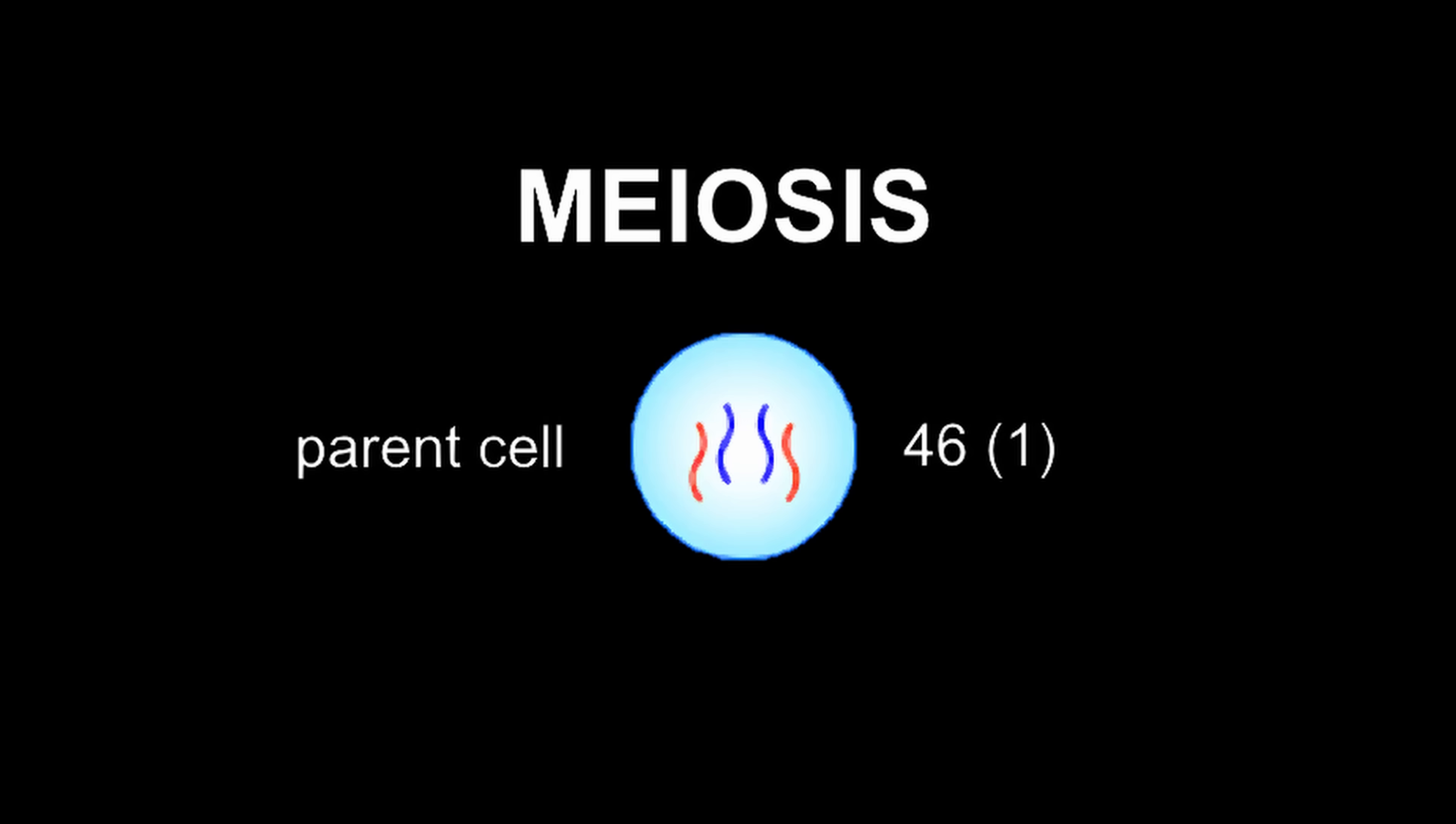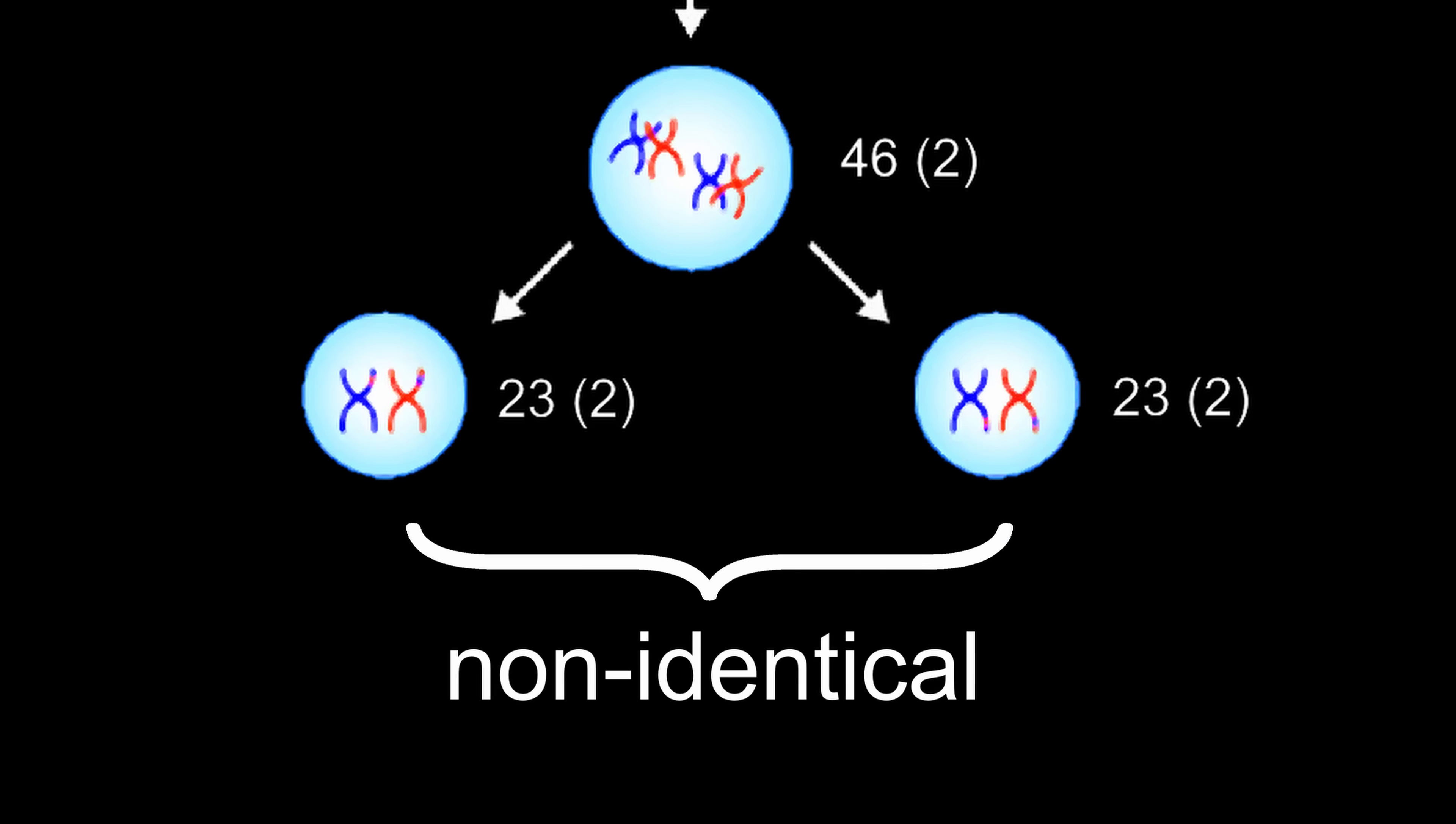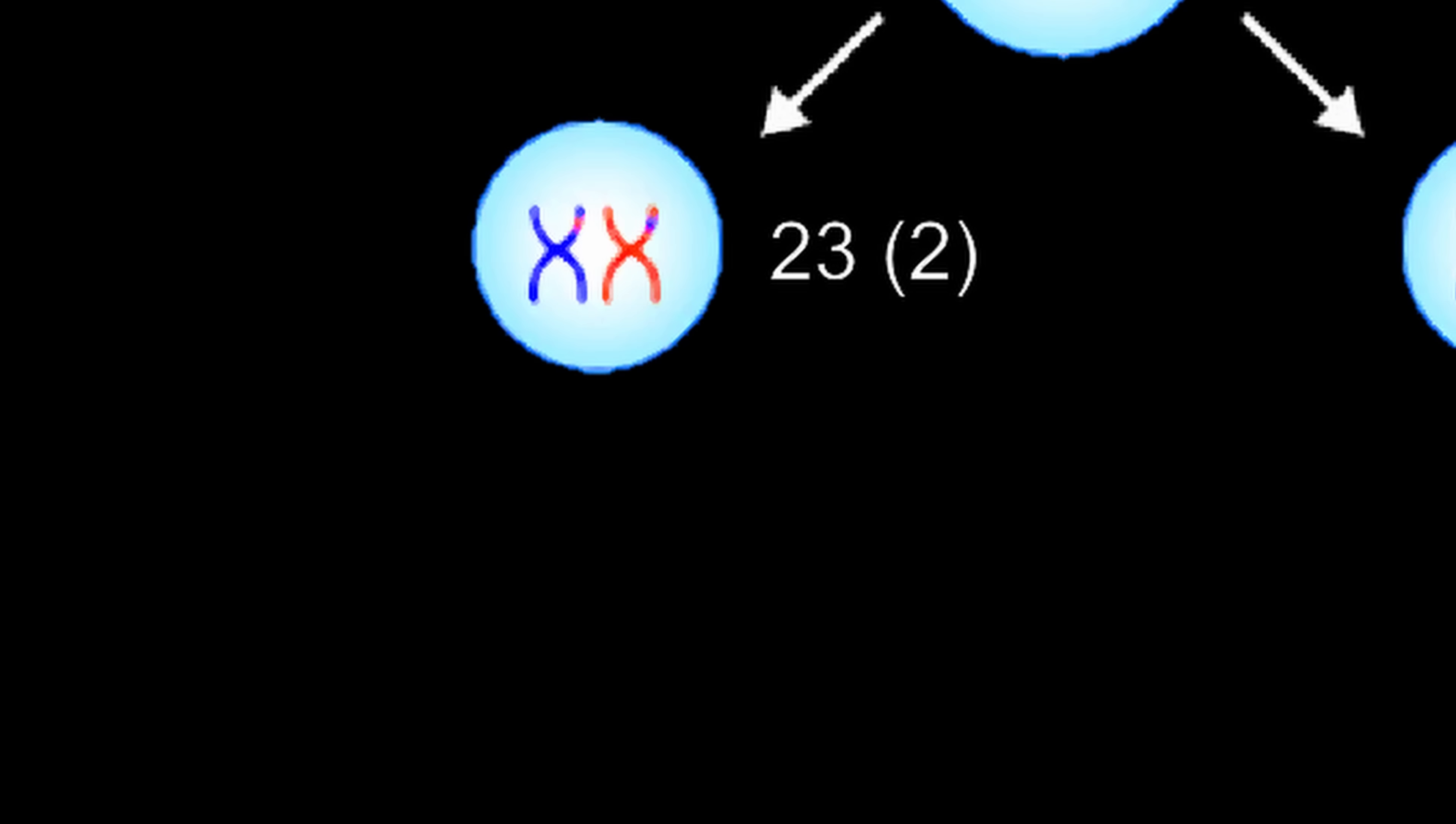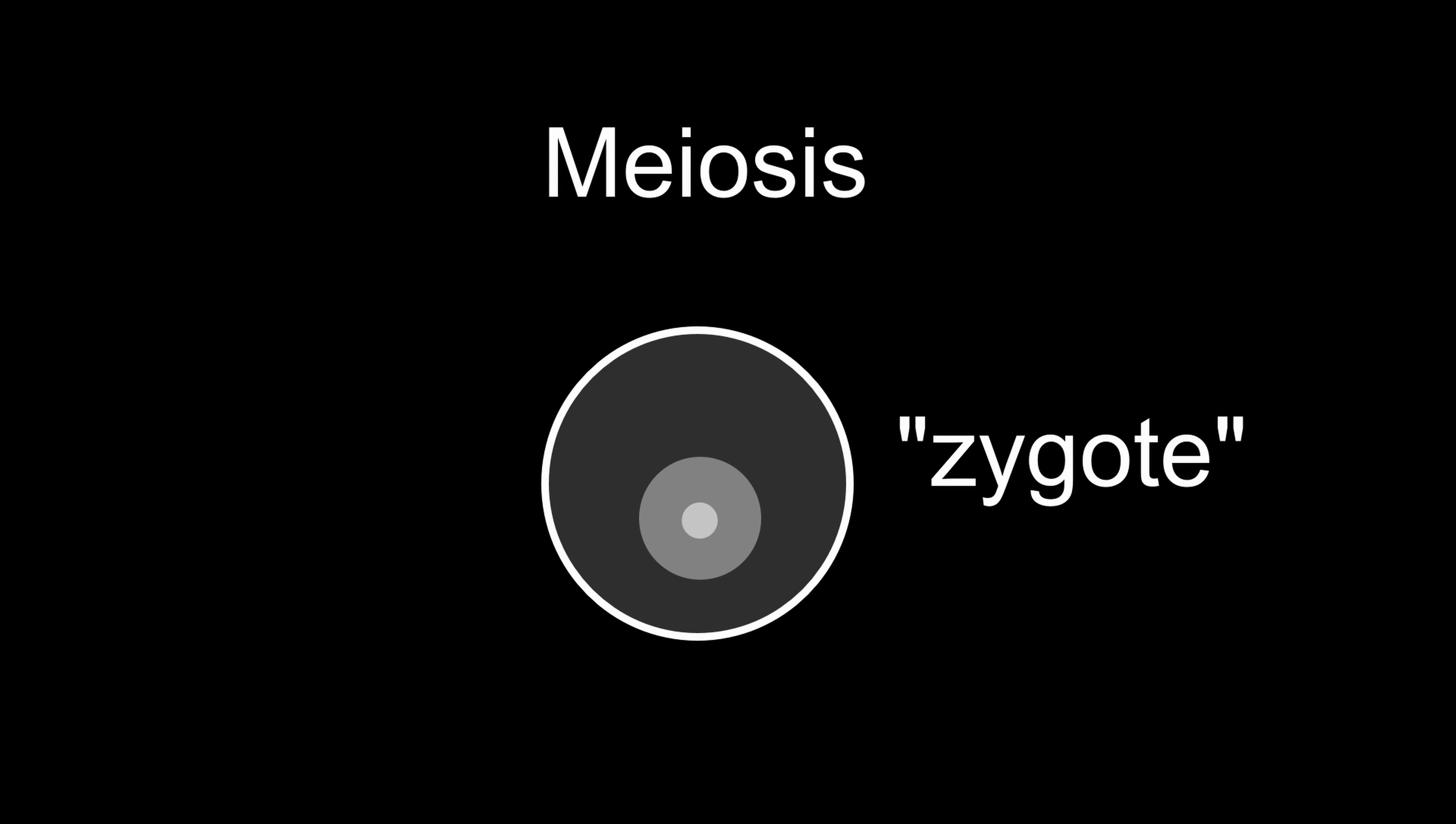Meiosis also starts with a diploid cell, but after replication, the chromosomes co-mingle and exchange genetic information in a process called crossing over. The cell is then split into two non-identical haploid cells. These have one set of chromosomes, but they still consist of two sister chromatids. These cells split again into four genetically different haploid cells, where each chromosome has one chromatid. Meiosis produces haploid cells so that when two gametes combine into a fertilized egg or zygote, it again has the correct number of chromosomes.